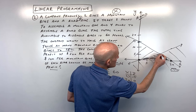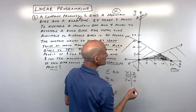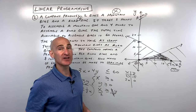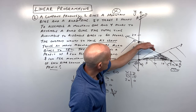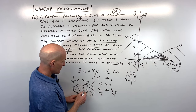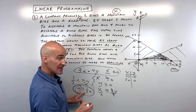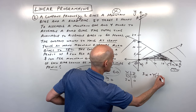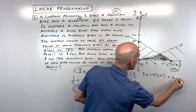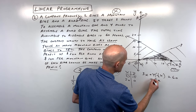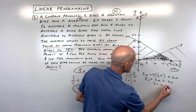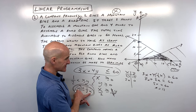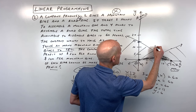The vertices of the feasible region are (0, 0), (20, 0), and the intersection of y = ½x and 3x + 4y = 60. Using substitution — put ½x in for y: 3x + 4(½x) = 60, giving 3x + 2x = 5x = 60, so x = 12. Then y = ½ × 12 = 6. So this vertex is at (12, 6).